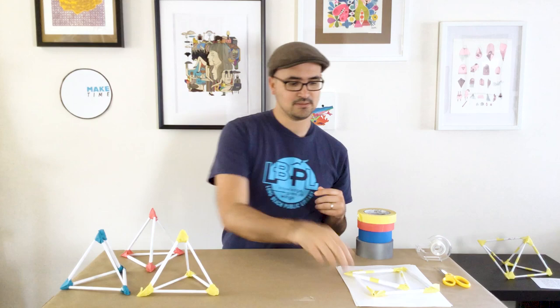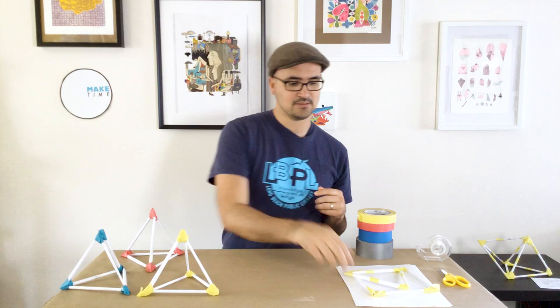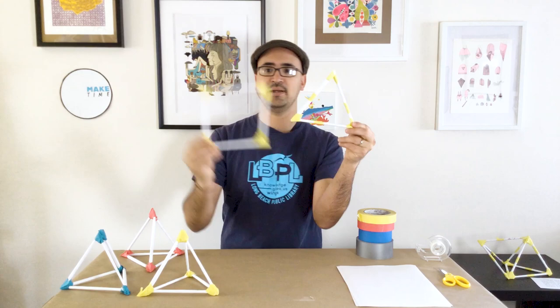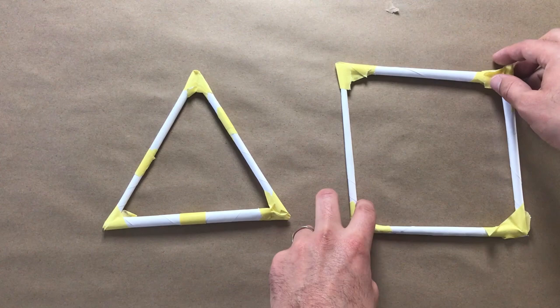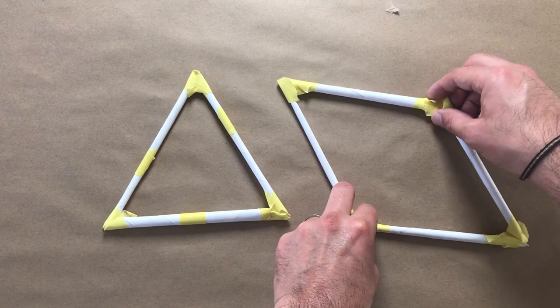So why triangles? Triangles are very strong shapes. To demonstrate, I'm going to compare it with this rectangle. If I take this rectangle and push in the sides, you'll notice that it changes in shape. What was once a rectangle is now a rhombus or a diamond. It's not a very strong shape.